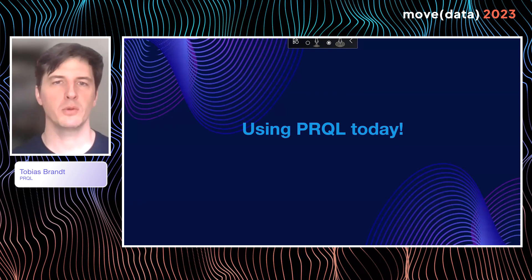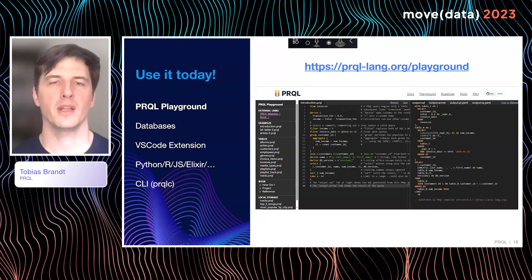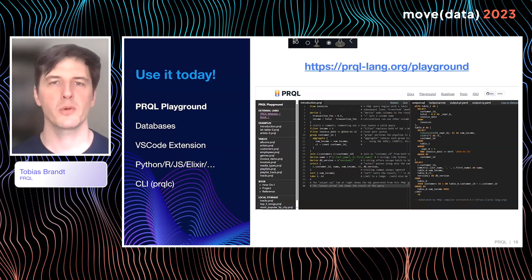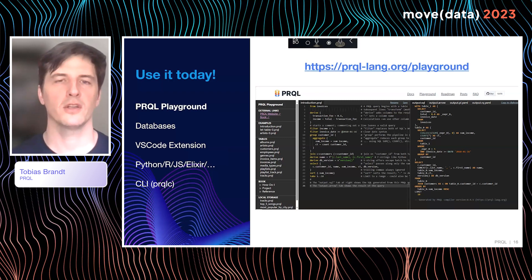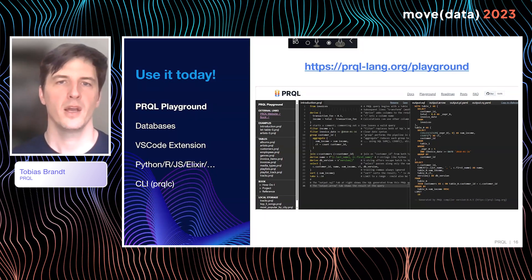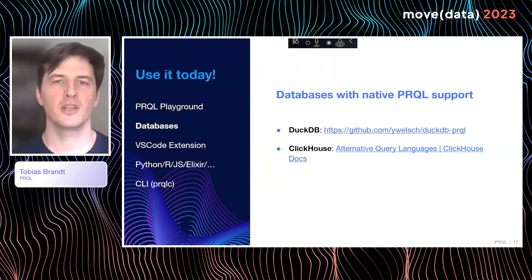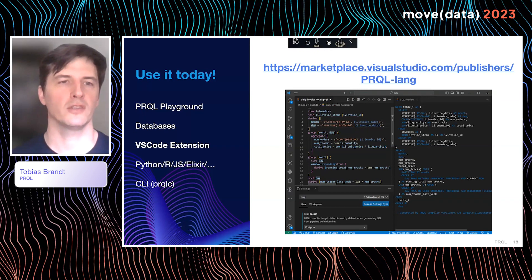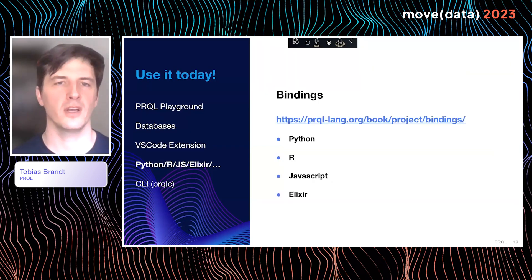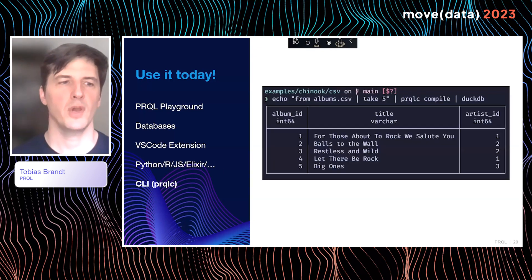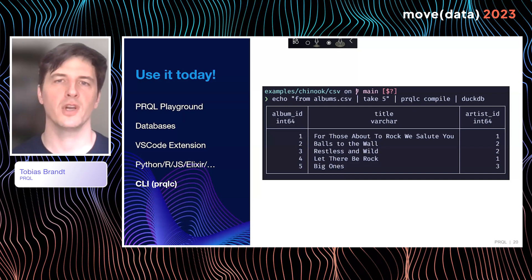Where can you use PRQL today? First, go to the link at the bottom of the screen, which is our online playground — our compiler compiled to WASM, running right in your browser. You can input PRQL queries and on every keystroke it will compile to SQL on the right-hand side. It also has a number of well-documented examples that will get you up to speed with PRQL in no time. There are two databases that already support PRQL natively: DuckDB by means of an extension, and ClickHouse that supports it as an alternative query language. We have a VS Code extension you can easily download and install. We have bindings for Python, R, JavaScript, and Elixir, and the list is growing as we receive contributions from the community. We also have a CLI tool which can take a PRQL query as input, produce a SQL query as output, and you can pipe that SQL to your favorite database CLI tool such as DuckDB or psql.